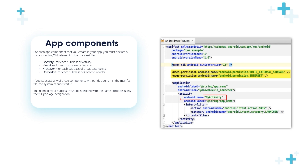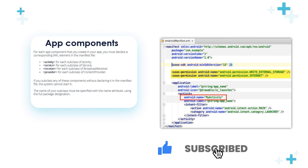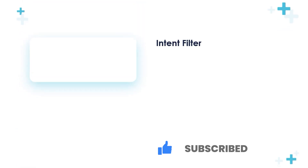For example, as you can see here, a new activity called MyActivity is added under the activity tag, with the name attribute specified.